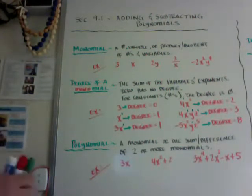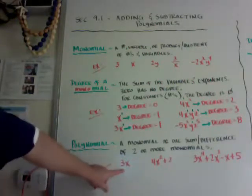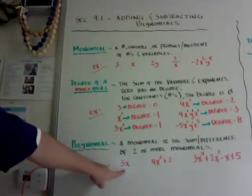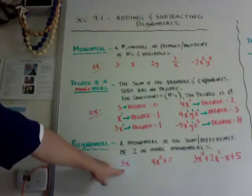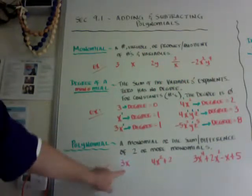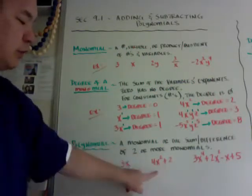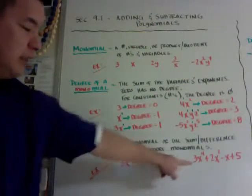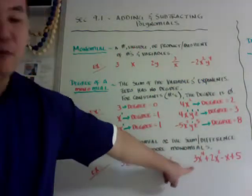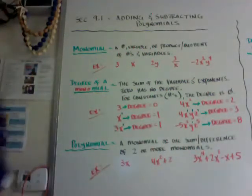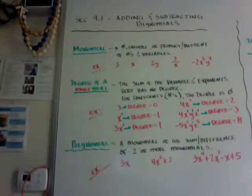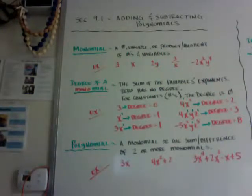Just for future reference, a monomial is also considered a term. So this is like saying one term or one monomial, two terms or two monomials. These are like a four-term polynomial. So just heads up with that.